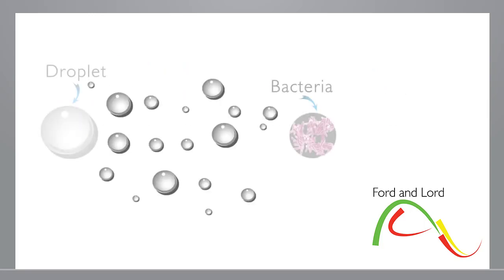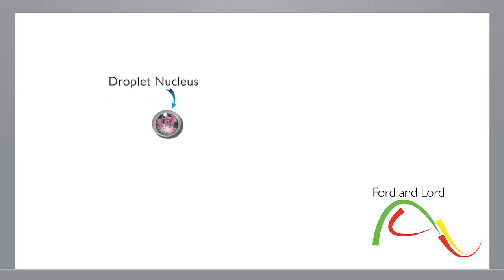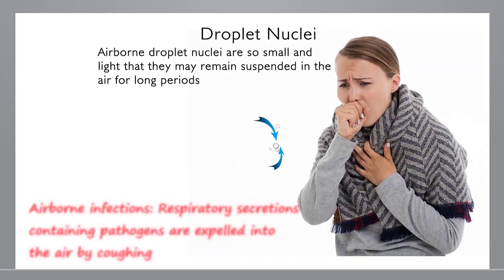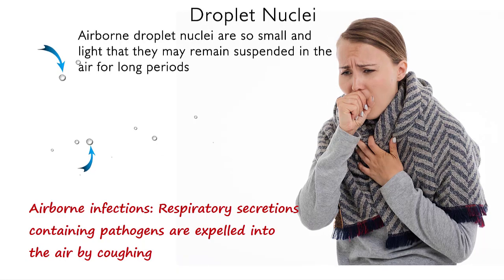Tuberculosis spreads by airborne transmission, which is sometimes known as droplet infection. Airborne transmission refers to the mechanism when droplet nuclei — small pathogen-containing particles of respiratory secretions — are expelled into the air by coughing. Droplet nuclei can remain suspended in the air for a long period, and the pathogens are capable of surviving for long periods outside the body, as they are resistant to drying.